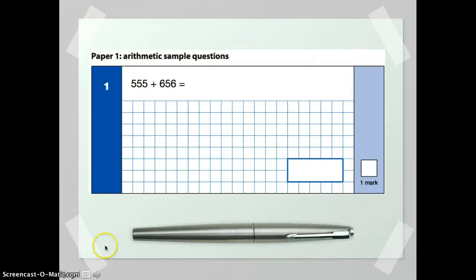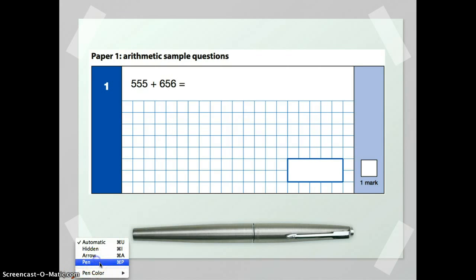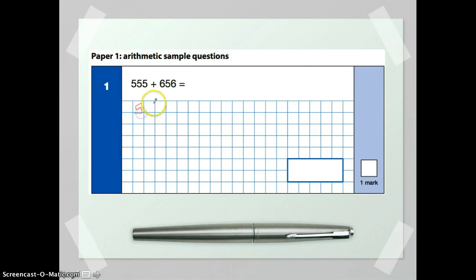So let's have a look at question number one. In paper one there are going to be a number of arithmetic questions. Most of these questions are only worth one mark, so the examiners will just be looking for you to get the correct answer. I suggest the best thing you can do is just to use an arithmetic method which you know works really well. For example, you could split up these two numbers into their hundreds, tens and units and then add those sequentially.